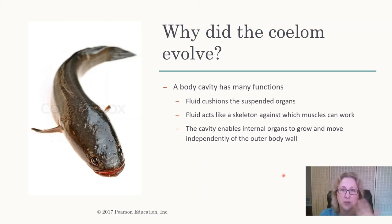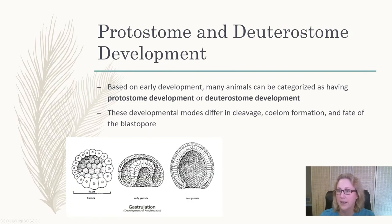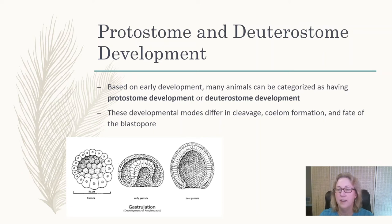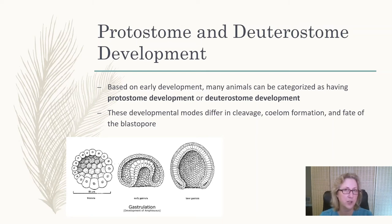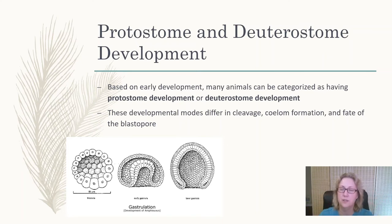There are two basic kinds of animal development: protostome and deuterostome. It used to be thought this would be a great way to divide all animals — representing some fundamental split in animal evolution, like the division between bacteria and archaea. It turns out that was not the case: neither deuterostomes nor protostomes form truly monophyletic clades.